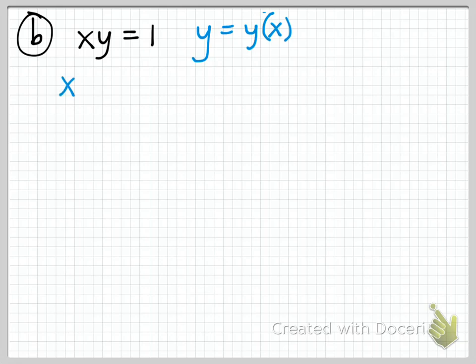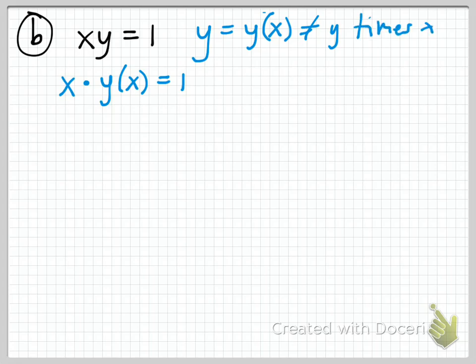So we have x times y of x equals 1. Be careful: when we write y of x, we don't mean y times x — y of x is not equal to y times x. It means y is some probably unknown function of x. This is important to recall when using this solution technique.